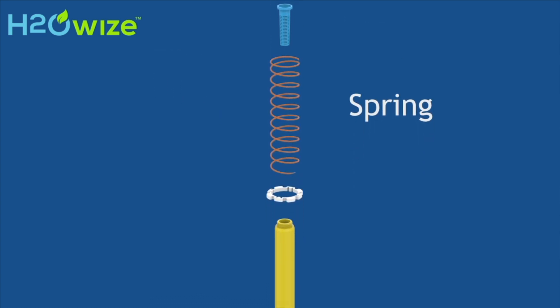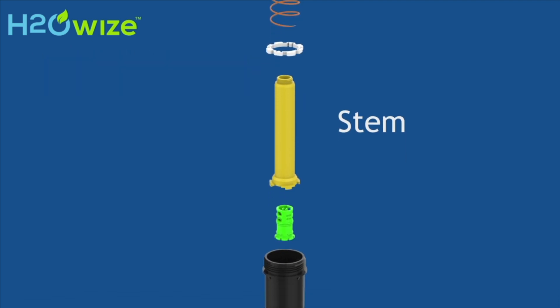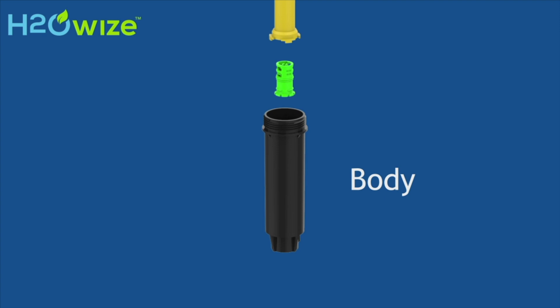Our patent-pending device is designed to fit inside the stem of most manufacturers spray bodies as shown in the video. Select between 30 or 40 PSI settings in a single part by using a flathead screwdriver to twist the top of our part 90 degrees.